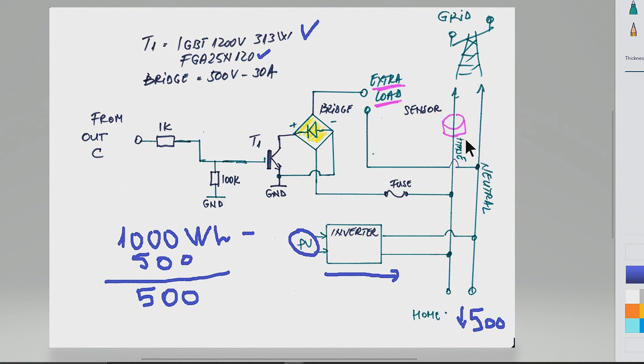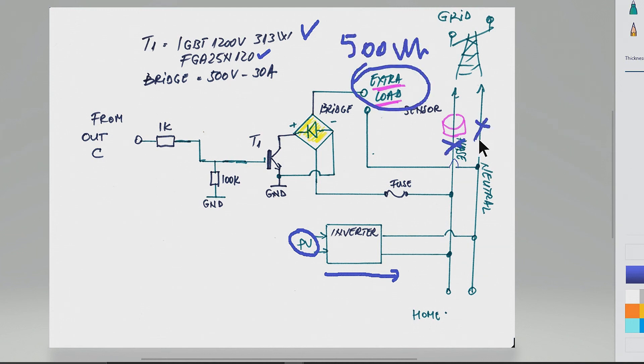All we have to do now is add a 500 watt load over here and balance the power exported to the grid. This is the main idea of this kind of circuit. It's not a limiter because it's not working to make a power adjustment to the input of the inverter. This electronics is just connecting an extra load to keep everything in balance.